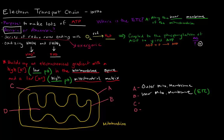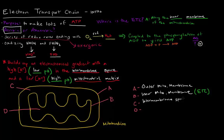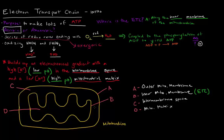C and D are pointing to different spaces. C is the space between the outer membrane and the inner membrane — that is the intermembrane space. Just like international flight is flight between countries, this space is between the two membranes. And D is the mitochondrial matrix, which is the space bound by the inner membrane — where the TCA cycle and the pyruvate dehydrogenase step occur.